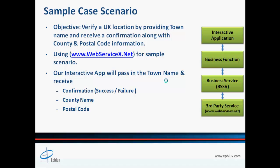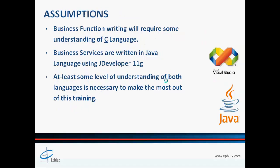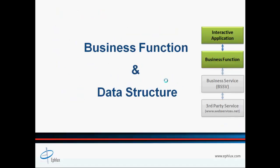Before we start with our hands-on exercise, let's lay down some common assumptions. This hands-on exercise will heavily rely on writing a business function in C language along with a business service in Java. Therefore, knowledge of both C and Java is necessary to make the most out of this exercise. If you don't have experience with C and Java, I recommend taking a course in both languages. Although detailed explanation is provided along the way for each code segment, knowledge of both C and Java is undeniably necessary.